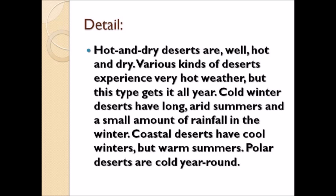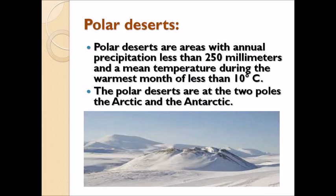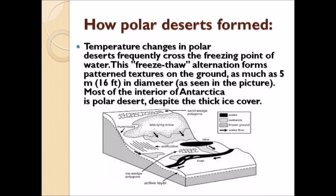Polar deserts are areas with annual precipitation less than 250 millimeters and a mean temperature during the warmest month of less than 10 degrees Celsius. They are located at the two poles: the Arctic and Antarctic. In polar deserts, temperature changes frequently cross the freezing point of water. This freeze-thaw alternation forms pattern textures on the ground as much as 5 meters or 16 feet in diameter, as seen in the picture.